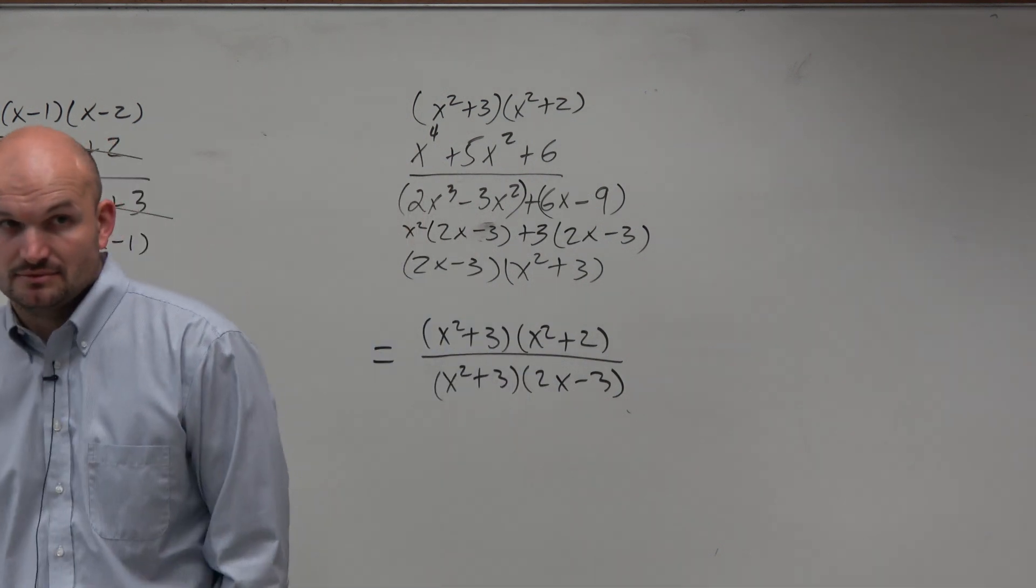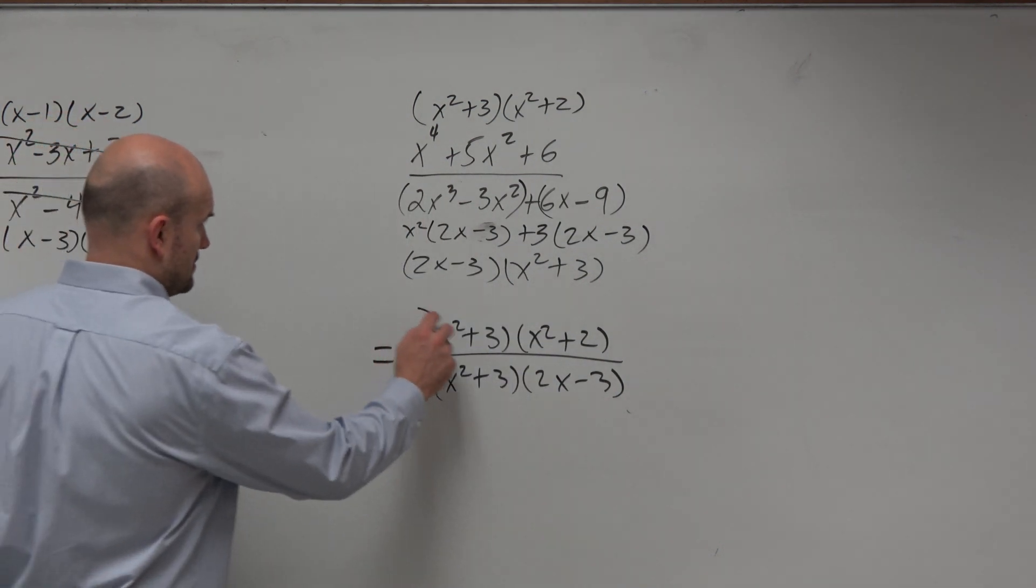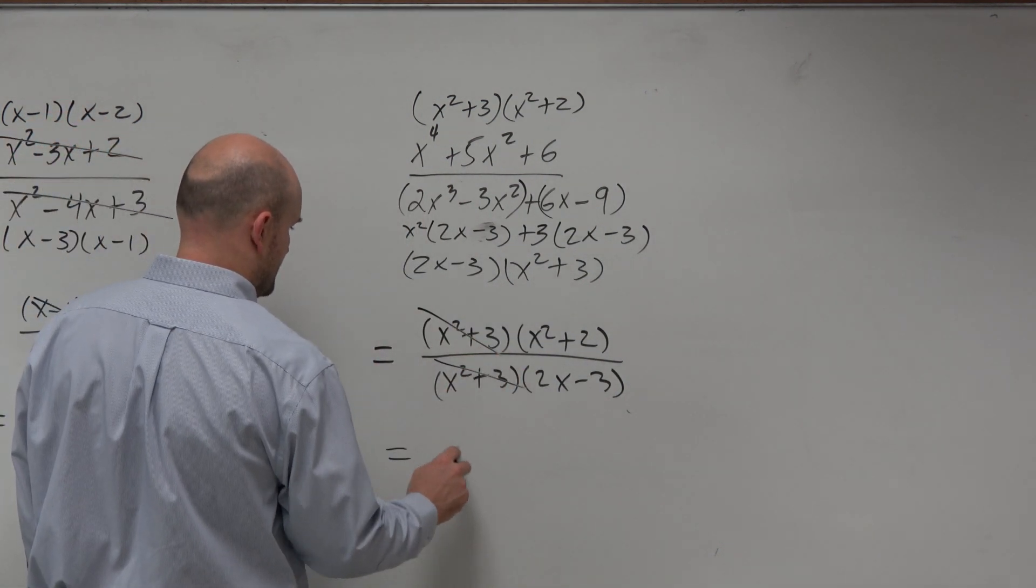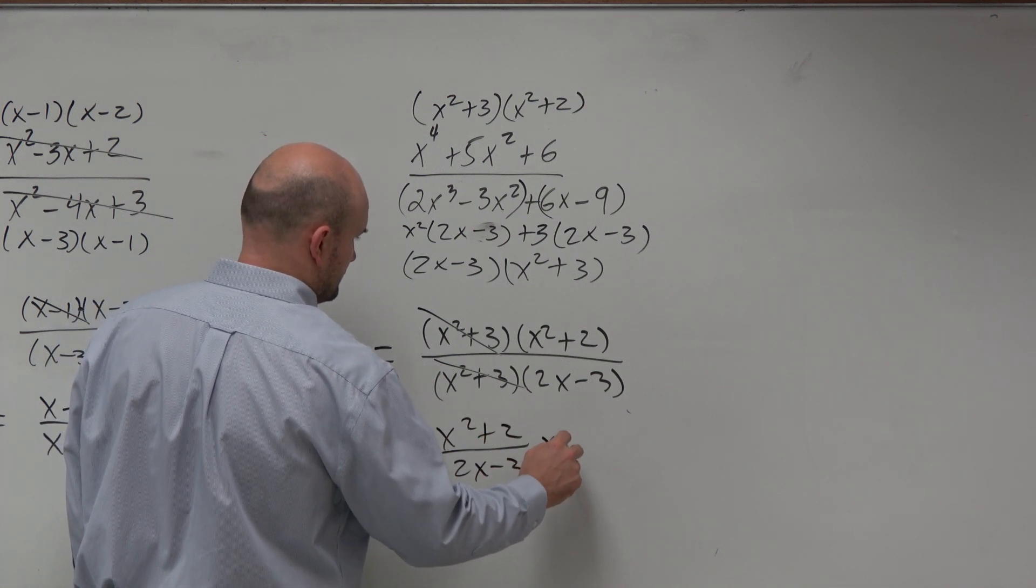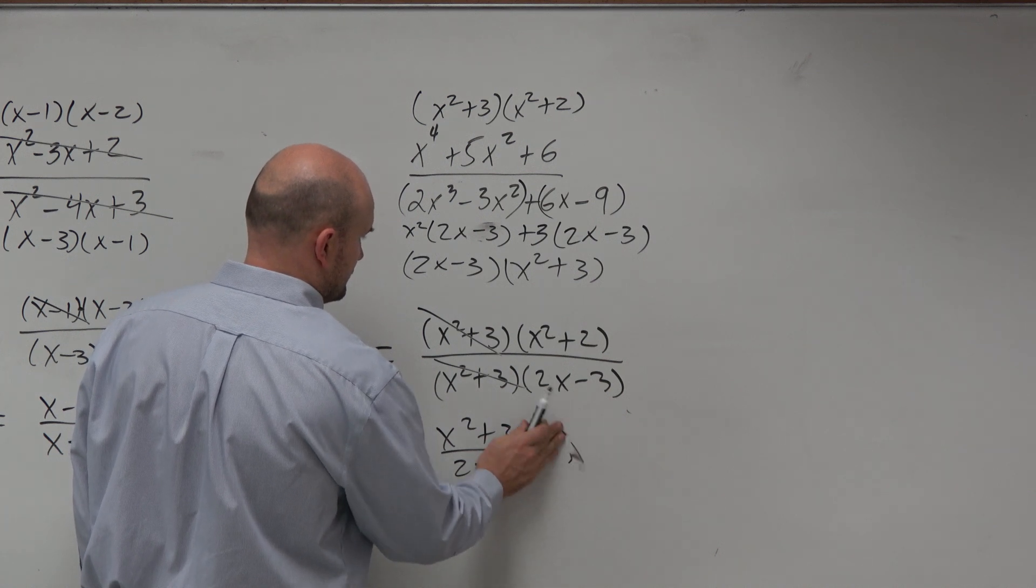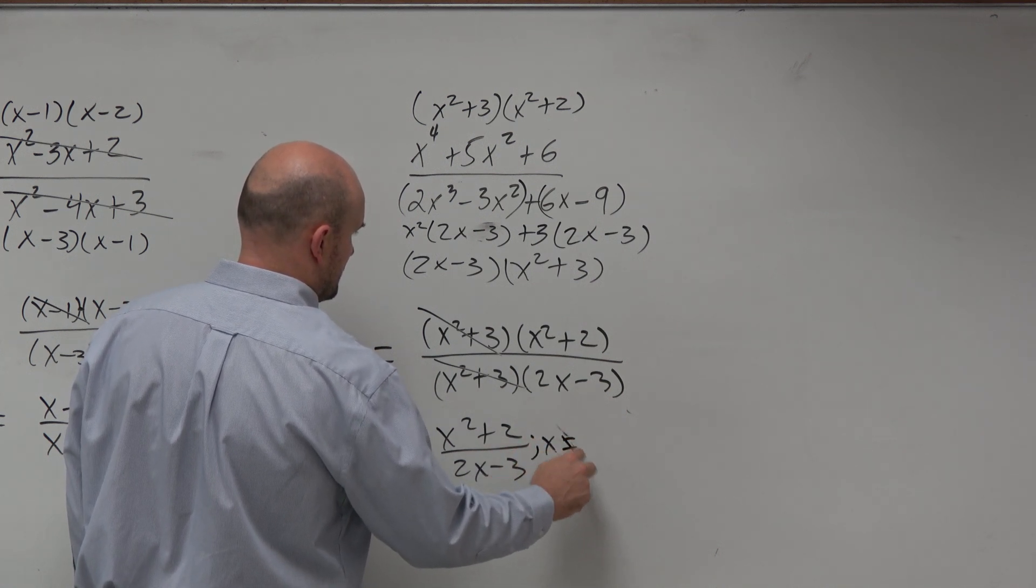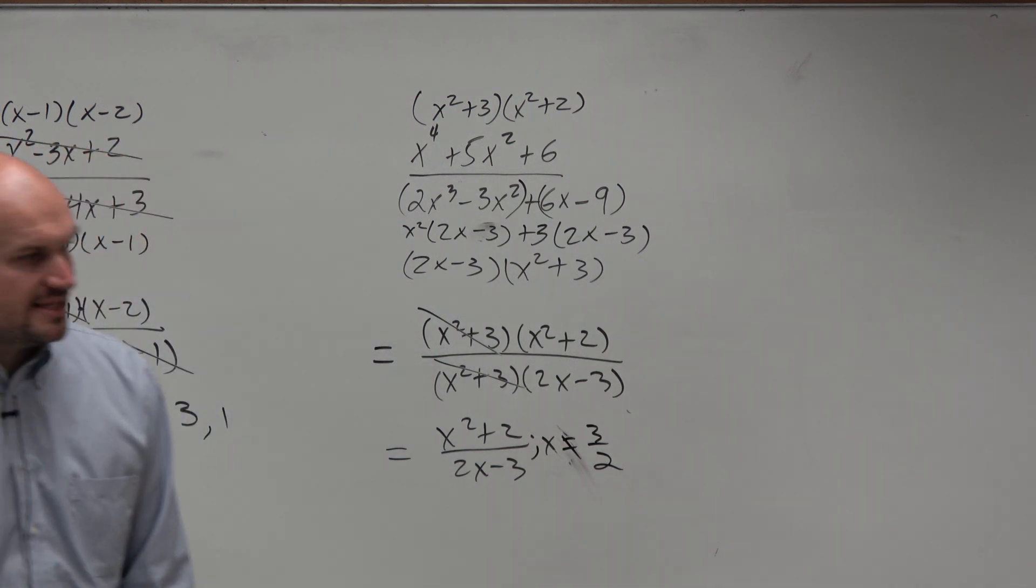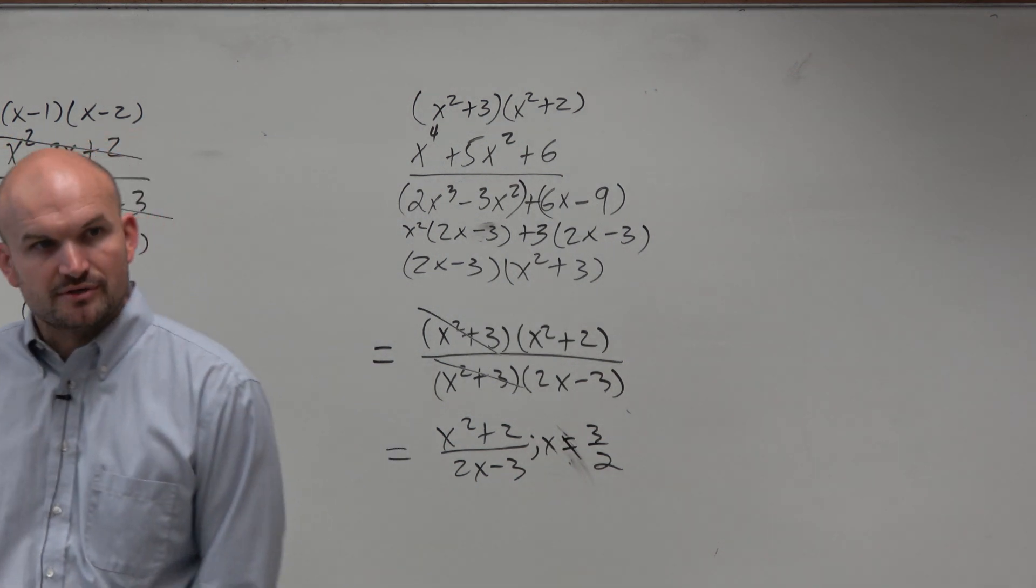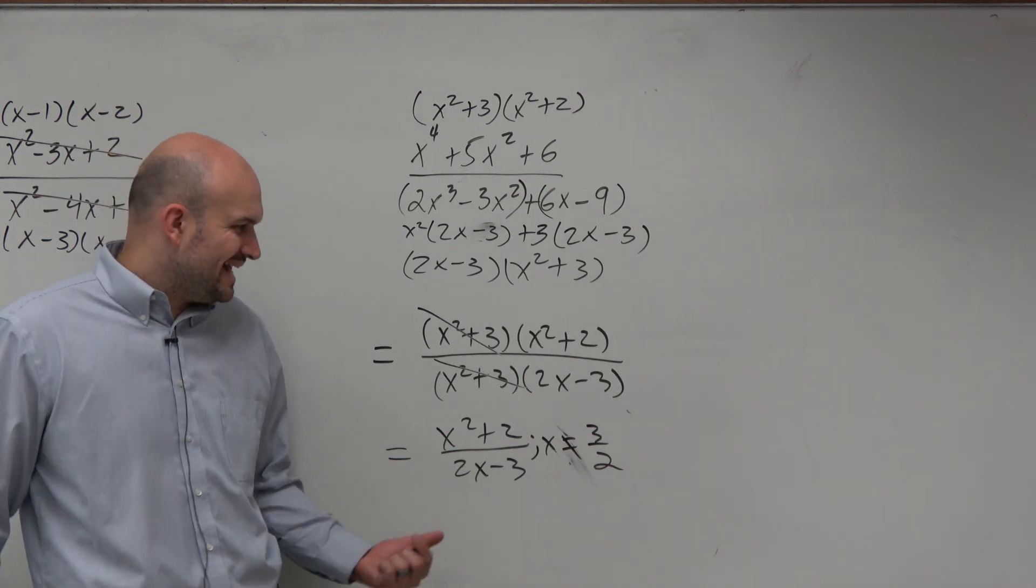Do I have some terms that divide out? So obviously, hopefully you guys, to set that equal to 0, to find you just set the denominator equal to 0, and you'd say x cannot equal 3 halves. But is that it?